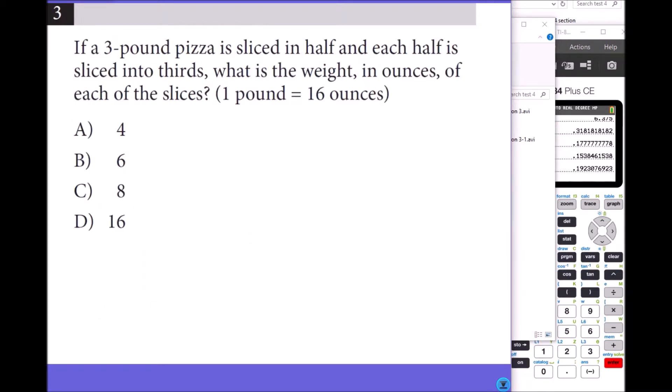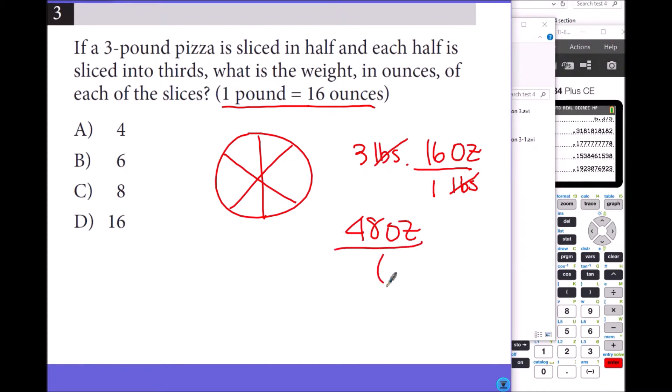If a 3-pound pizza is sliced in half and each half is sliced into thirds, that's a total of 6 slices, right? What is the weight in ounces of each of the slices? The total is 3 pounds. When you convert the units, you can put the pounds you're trying to get rid of in the denominator. One pound equals 16 ounces, so that's a total of 48 ounces. But one slice, you have to divide by 6 because there are a total of 6 slices. You get 8 ounces for each slice, so it is C.